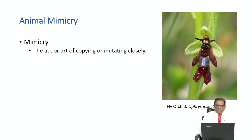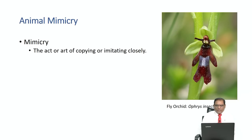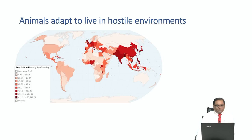During the process, this flower gets pollinated by insects. This is a nice way of inviting the pollinators — this flower takes the form of an insect. That is mimicry: closely imitating something else. Animals adapt to live in hostile environments. Let us study this world map for a moment. This map shows you the human population density across the five continents: the Americas, Africa, Europe, Asia, and Australia.